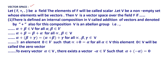F satisfies some algebraic rules to be called a field, and the elements of F will be called scalars. Let V be a non-empty set whose elements will be called vectors. Then V is a vector space over the field F if and only if it follows the following properties. There is defined an internal composition in V called addition of vectors, denoted by plus, and under this composition V is an abelian group.